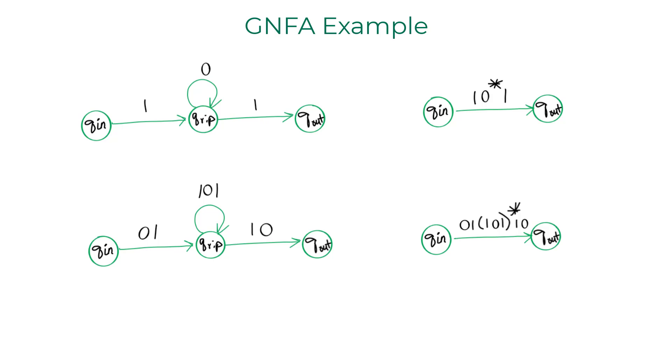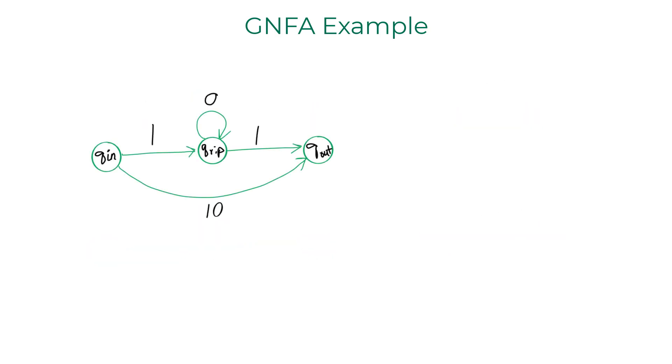Now GNFA being an NFA can have multiple transitions from a single state on the same regular expression or multiple transitions in general. Suppose you have this parallel transition from qin to qout in that example. The GNFA could take either of those routes to get to qout from qin. So we can actually unify both these transitions using a union operator.